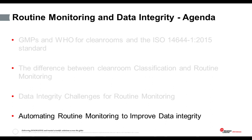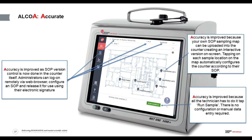Let's look at how we can automate our routine environmental monitoring programs to improve data integrity and reduce human error. With this particular particle counter on screen, accuracy is improved because the SOP sampling map from the site's SOP has been uploaded into the counter itself, creating an interactive version of the SOP sampling map. The technician follows the map to the next sampling location and simply taps on the location — the counter then automatically configures itself according to the SOP. There is nothing the technician has to do other than tap to run the sample; no manual configuration or manual data entry is required.